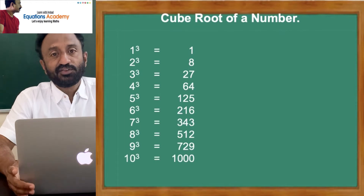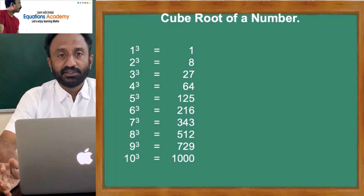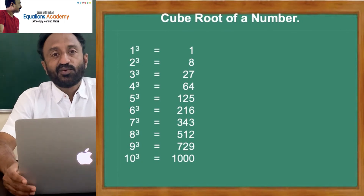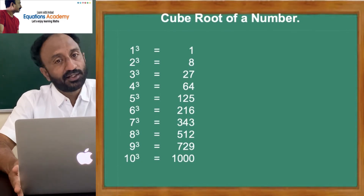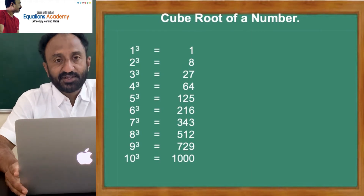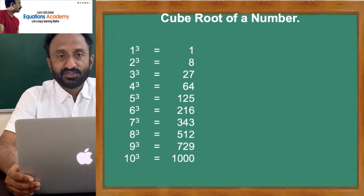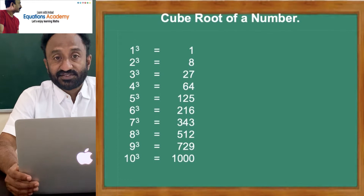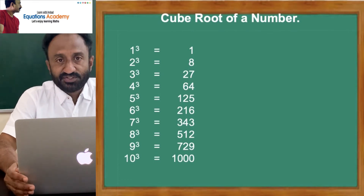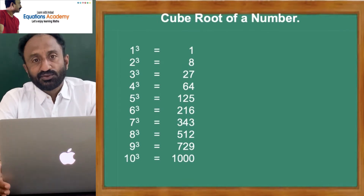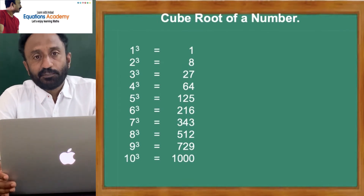In order to find the cube root of a number using the tricky method, you need to learn cubes of numbers from 1 to 10. 1 cube is 1, 2 cube is 8, 3 cube is 27, 4 cube is 64, 5 cube is 125, 6 cube is 216, 7 cube is 343, 8 cube is 512, 9 cube is 729, and 10 cube is 1000.